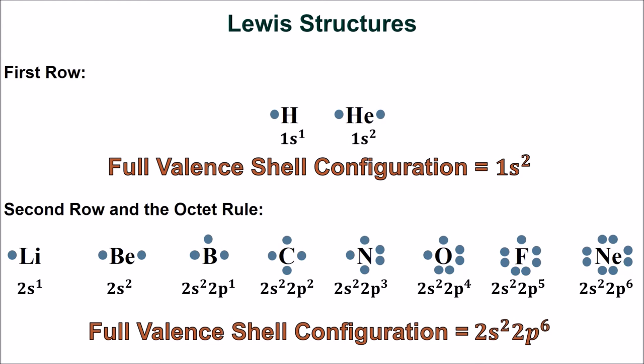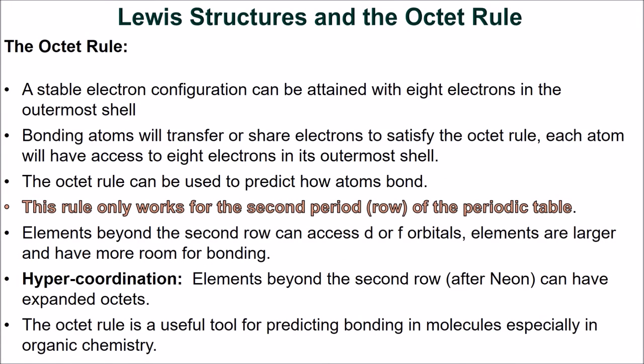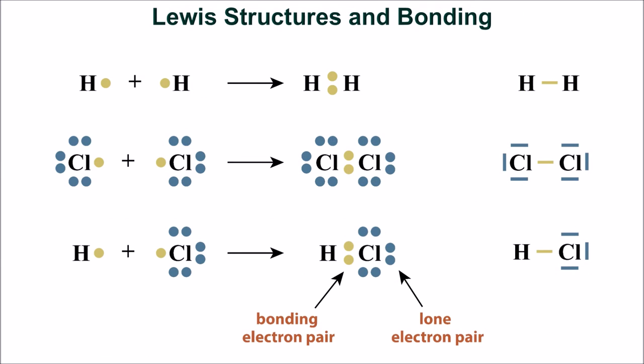This figure shows the Lewis structures for the first ten elements of the periodic table. In the first row, helium has a full valence shell with just two electrons. Neon has a full octet with eight electrons. This is why the noble gases are generally unreactive — they already have a full octet of electrons. The octet rule can be used to predict how atoms bond, based on the premise that a stable electron configuration can be attained with eight electrons in the outermost shell. Bonding atoms will transfer or share electrons to satisfy the octet rule, so each atom has access to eight electrons in its outermost shell.